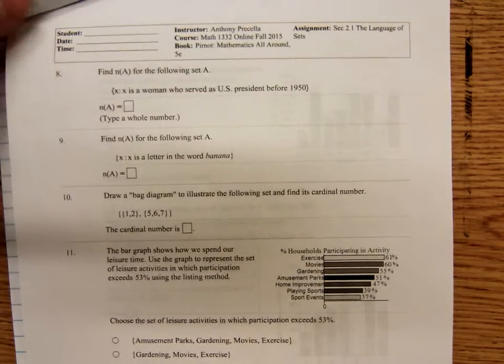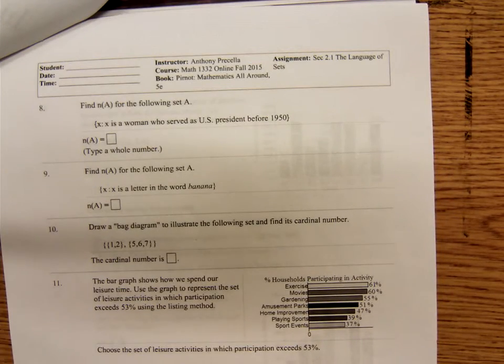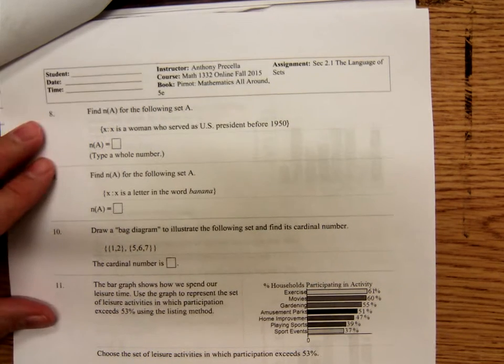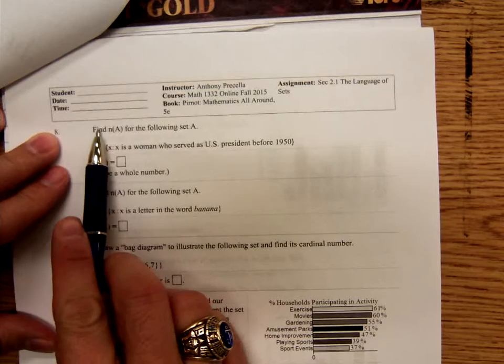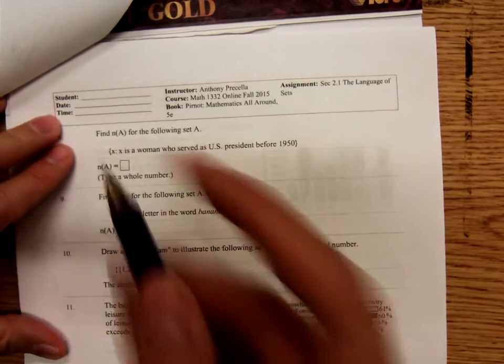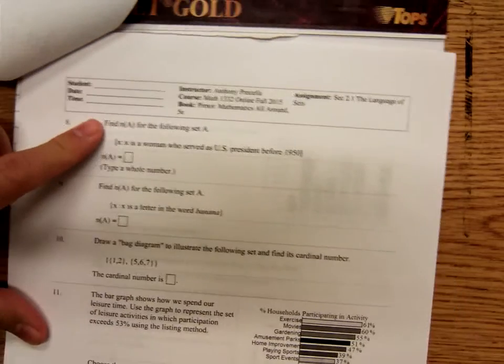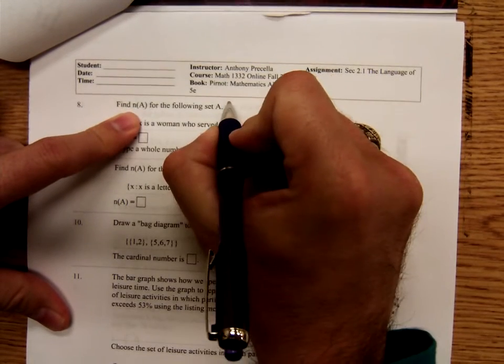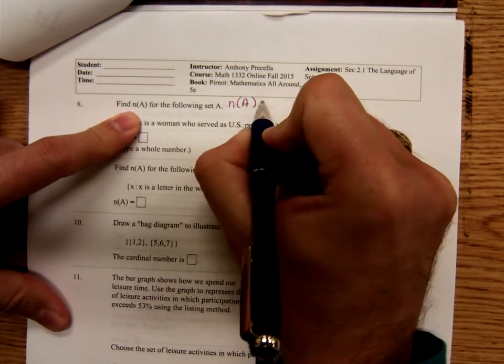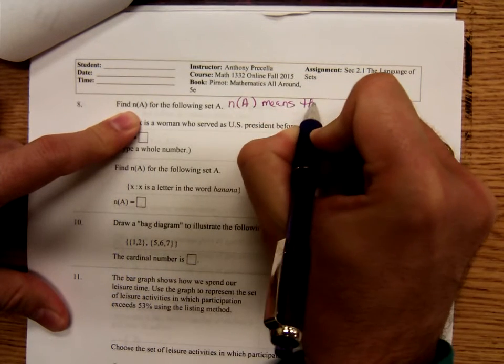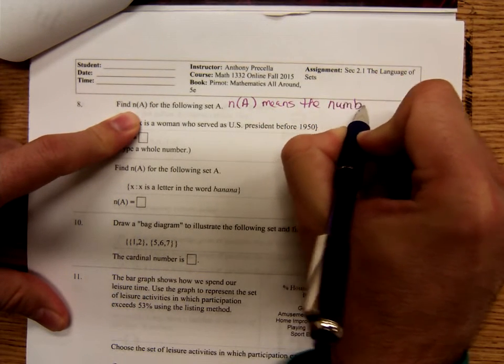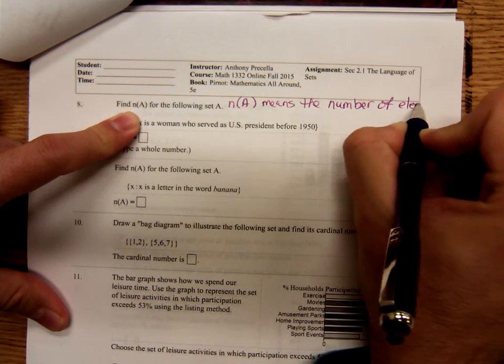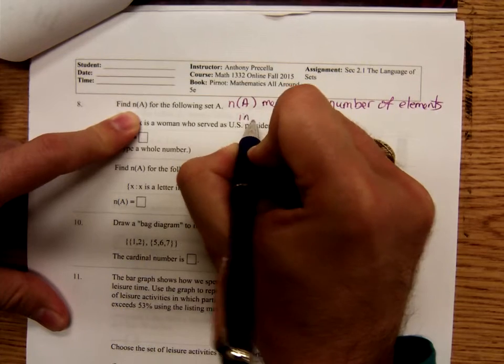Now, next we're going to discuss the cardinality of sets. By cardinality, we mean the number of elements in the set. This says find n of A. For the following set A. Find n of A. Well, n of A means the number of elements in A in set A.